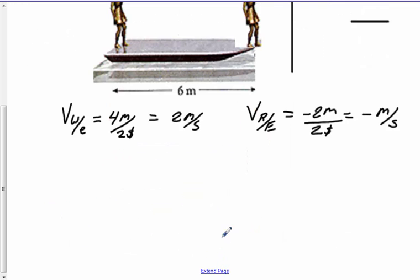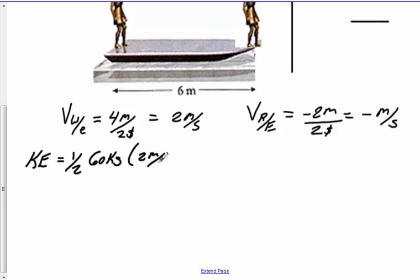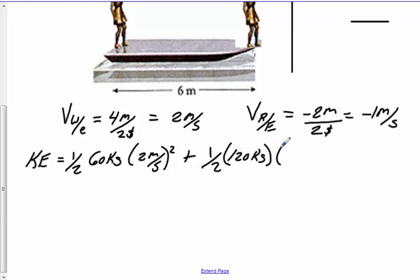Now we run the kinetic energy with the raft not tied. KE equals ½ × 60 kilograms × (2 m/s)² plus ½ × 120 kilograms × (−1 m/s)². Remember, kinetic energy is a scalar quantity. The total kinetic energy is 180 joules. So there's definitely a difference in kinetic energy — 270 joules when tied versus 180 joules when not tied.